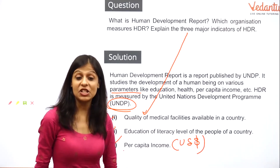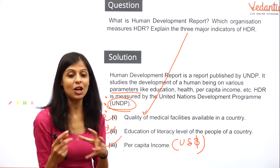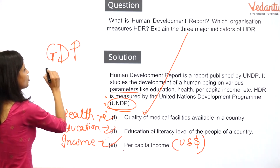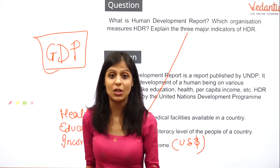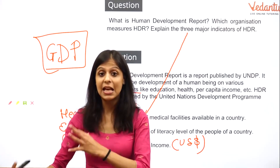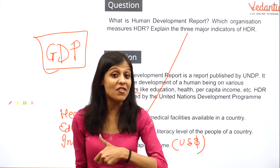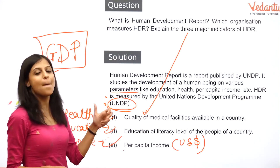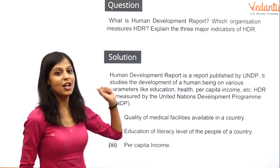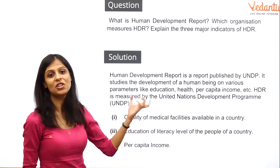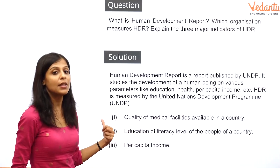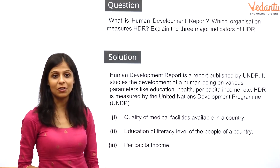Towards the conclusion, mention that the Human Development Report gives a better insight into a country's progress compared to GDP, because GDP only measures the monetary value — the final cost of goods and services produced in a country's domestic territory — and ignores the human factor, which is well captured by HDR. Structure your answer with a good introduction, the UNDP section, and then the three indicators in bullet points.